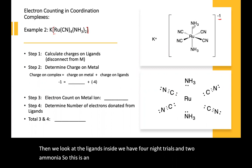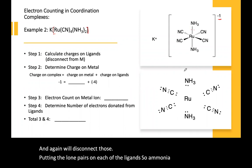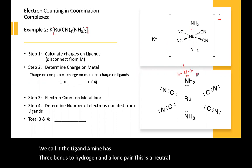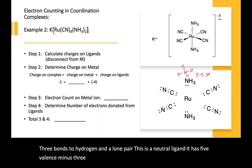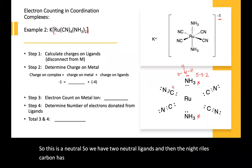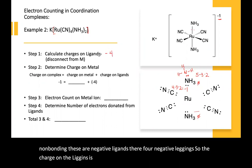This is an octahedral complex. We disconnect, putting the lone pairs on each of the ligands. Ammonia — we call it the ligand amine — has three bonds to hydrogen and a lone pair. It has five valence minus three bonds minus two non-bonding, so this is a neutral ligand: two neutral ligands. The nitriles: carbon has four valence minus half the bonding, three bonds, minus two non-bonding — these are negative ligands. There are four negative ligands, so the charge on the ligands is minus four.